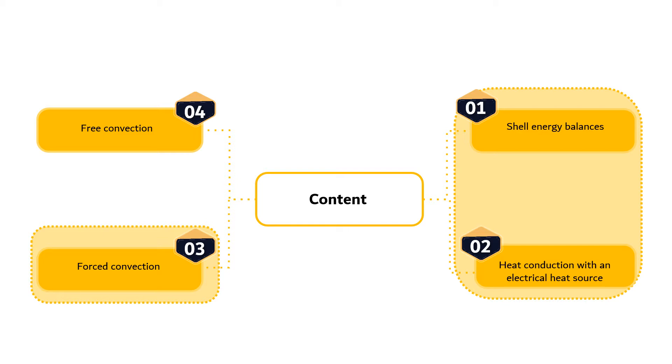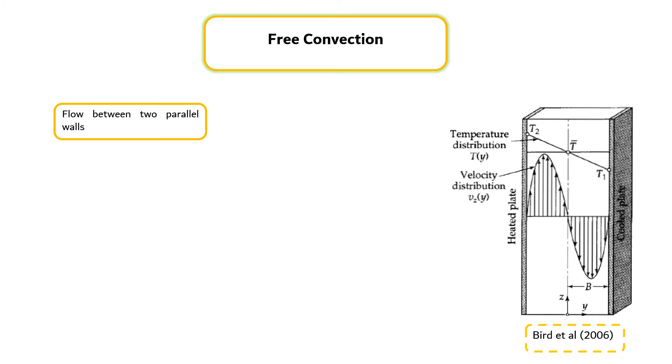In this segment, we will discuss Free Convection. We will particularly focus on an elementary free convection problem, namely the flow between two parallel walls maintained at different temperatures as shown in the right figure. A fluid with density rho and viscosity mu is located between two vertical walls a distance 2B apart. The heated wall at